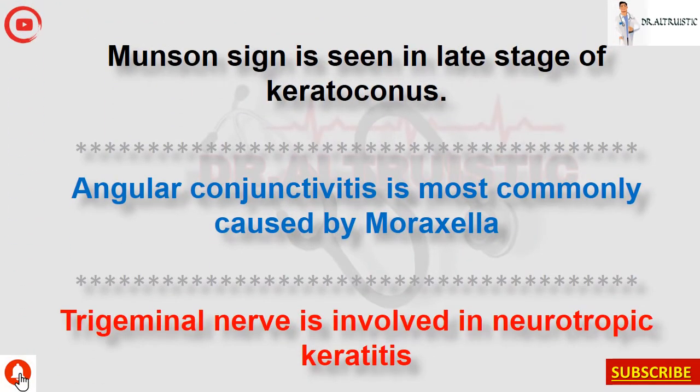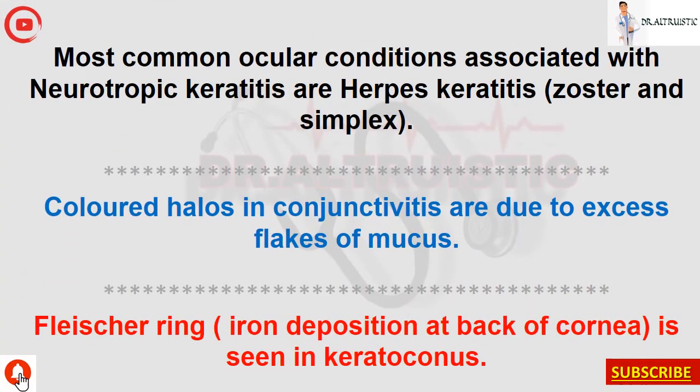Munson sign is seen in the late stage of keratoconus. Angular conjunctivitis is most commonly caused by Moraxella. Trigeminal nerve is involved in neurotrophic keratitis. Most common ocular conditions associated with neurotrophic keratitis are herpes keratitis — zoster and simplex. Colored halos in conjunctivitis are due to excess flakes of mucus.